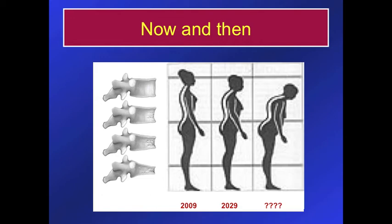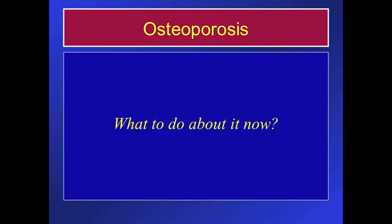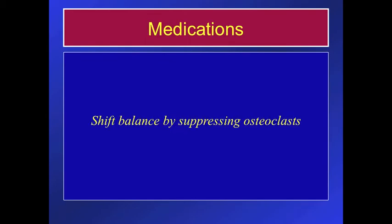So in youth, the osteocytes and the osteoblasts predominate, and when you get over 40, the osteoclasts take over. The question is, what can we do about it now? Well, the medications do some things. They shift the balance by suppressing the cells that are eating up the bone. Sensible enough — you're making just as much and you start destroying less.